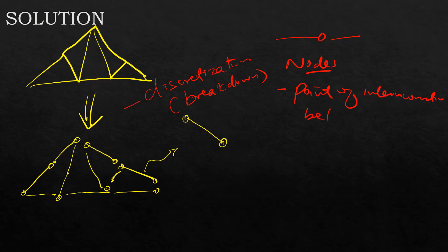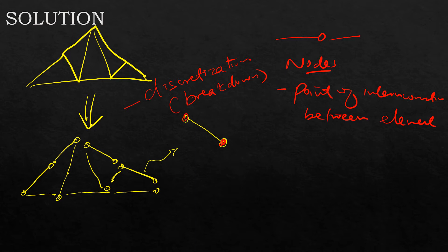Nodes are very important and you'll be hearing them many times in finite element analysis. Once we subdivide our system into many smaller bodies or finite elements, they will be interconnected at two common points — this is when we are talking of 1D or linear elements. For 2D they can be connected at boundaries, but for now we stick with 1D. Nodes are important because for a structure we need to determine displacement at various points — these are the degrees of freedom, and they are calculated at the nodes of the element.